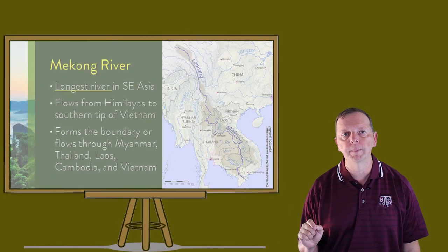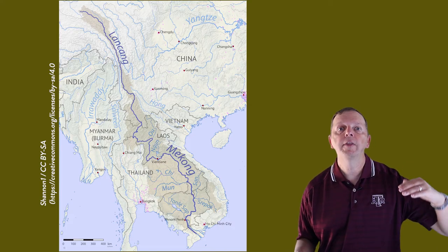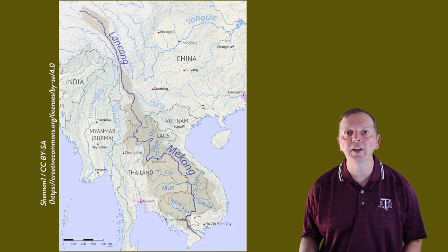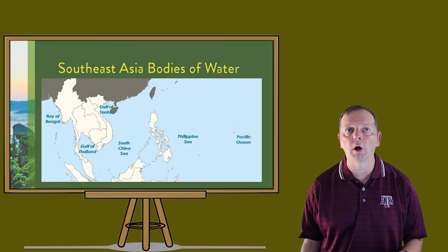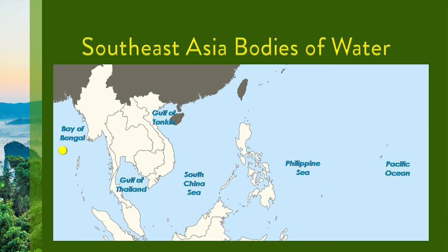Out of the mountains on the mainland, there are several rivers, but the biggest and most significant is the Mekong River. Mekong is only one of several names by which this river is known. As it flows out of the Himalayas and China, it goes through five Southeast Asian countries, ending up in Vietnam. The significant bodies of water include the Bay of Bengal, the Gulf of Thailand, the Gulf of Tonkin — which played center stage in the beginning of America's war in Vietnam — the South China Sea between Vietnam and the Philippines, and the Philippine Sea, which opens out into the Pacific Ocean.